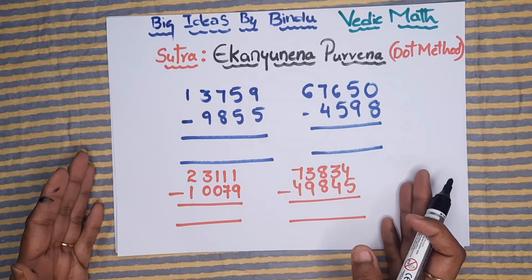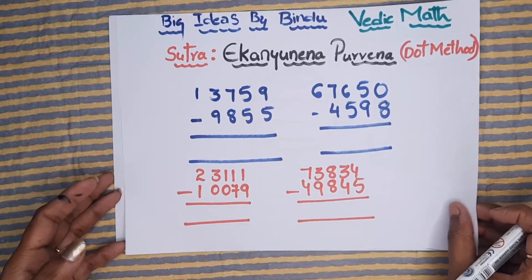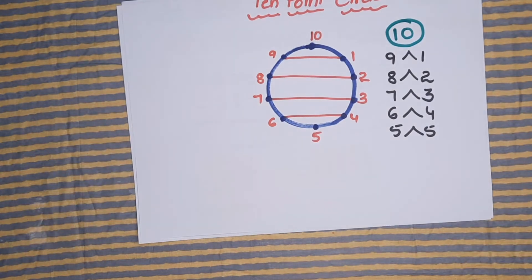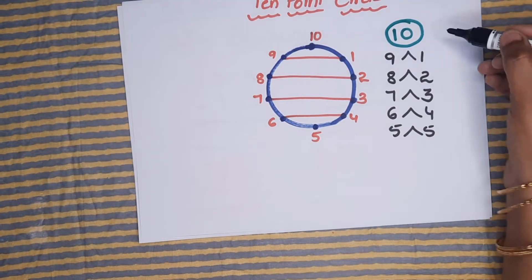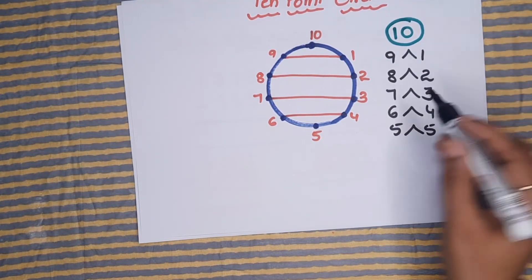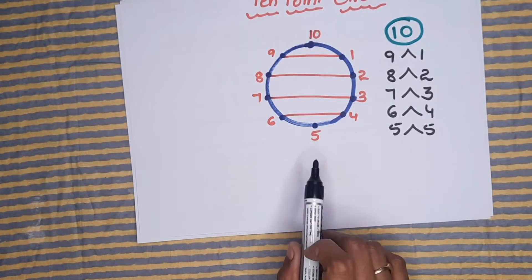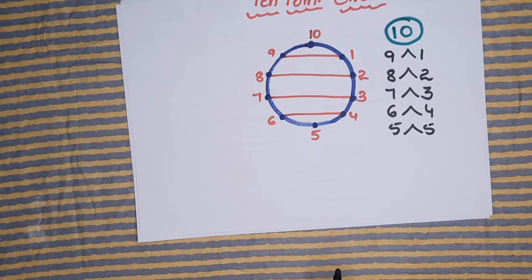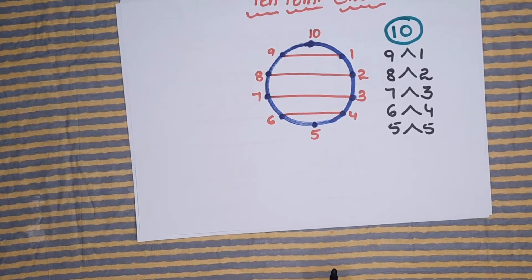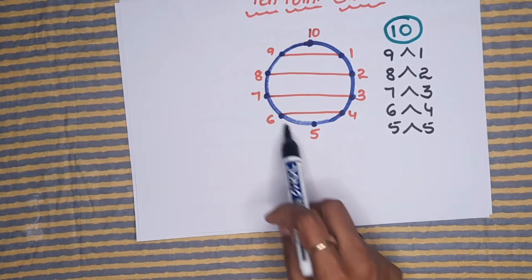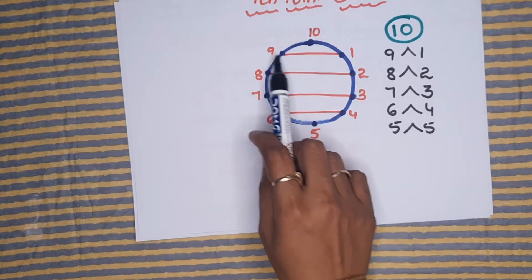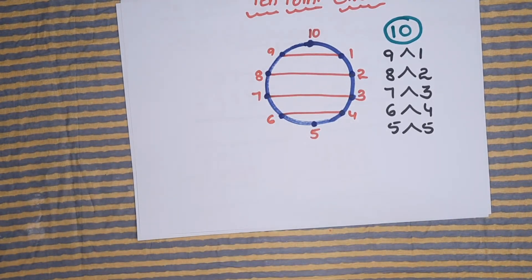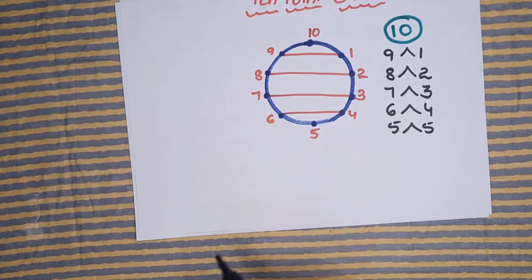Before going into this topic, let us revise the 10-point circle. The 10-point circle uses 10 as the common number. If you observe this circle, it is a circle with 10 points, and it is very helpful to memorize the friends — the numbers which are below 10, arranged in chronological order showing how 10 is the commonality.